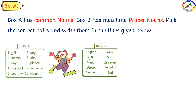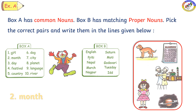Next, the second one. Month — so we have to find the month here. English, Priti, Nepal, March — yes. So what is the month? March. The proper noun of month is March.